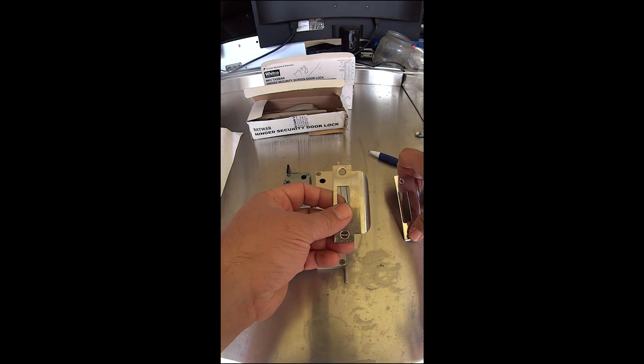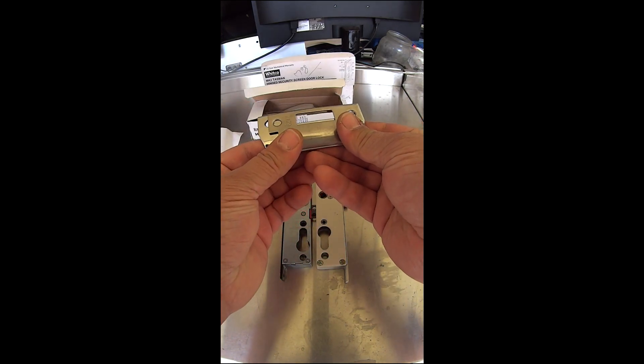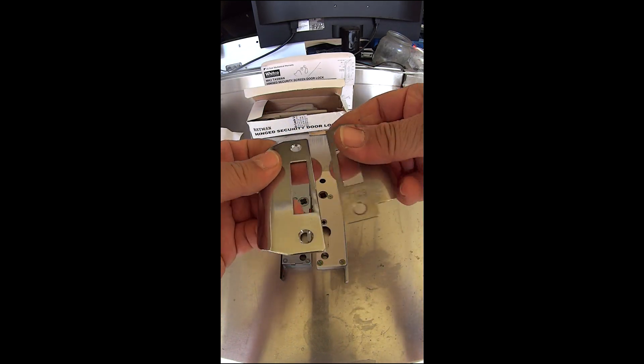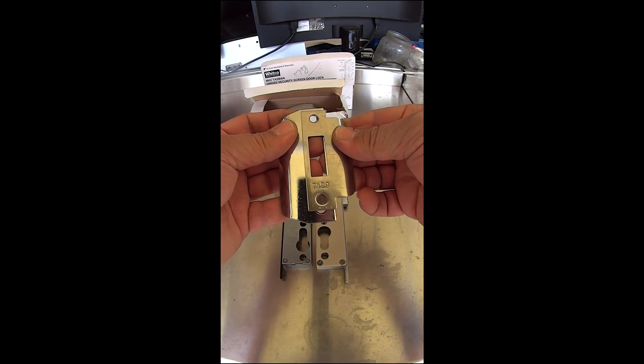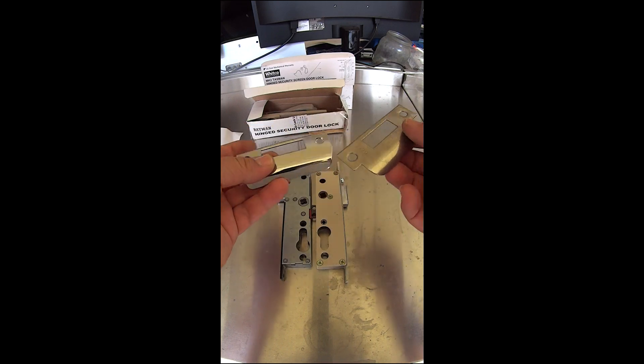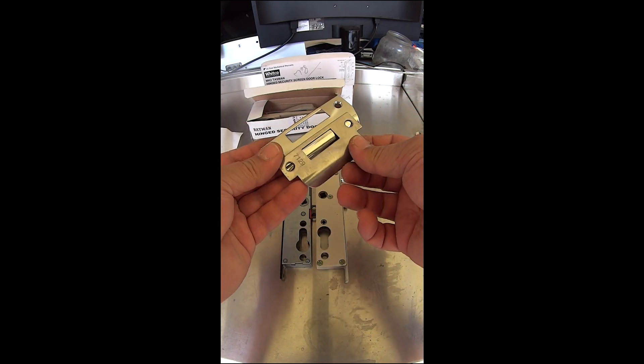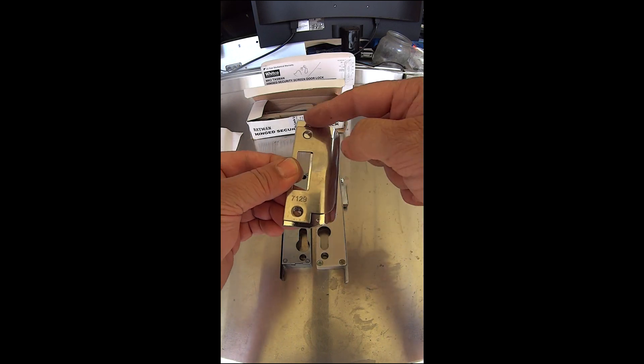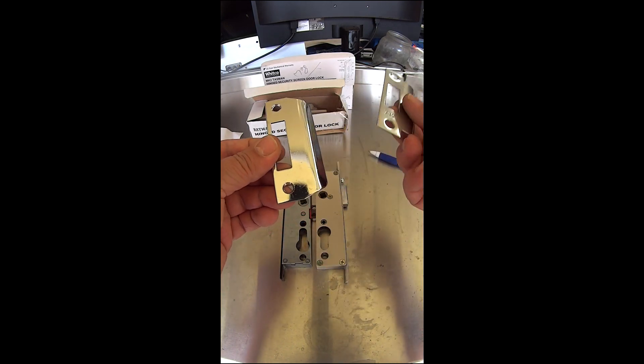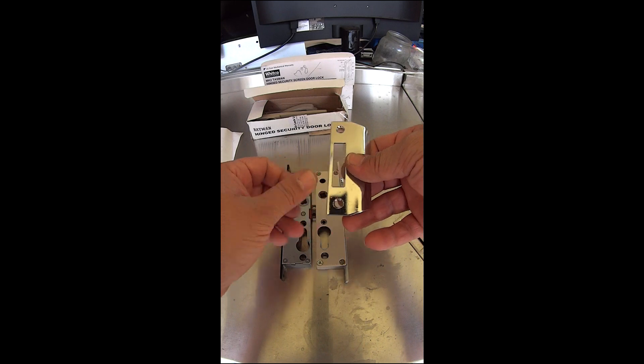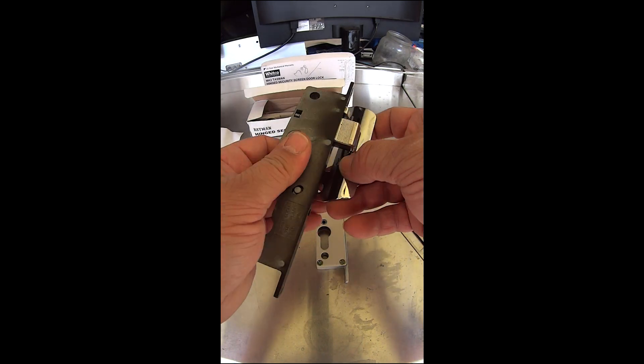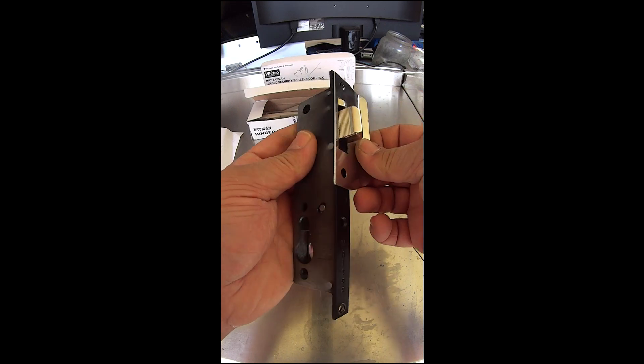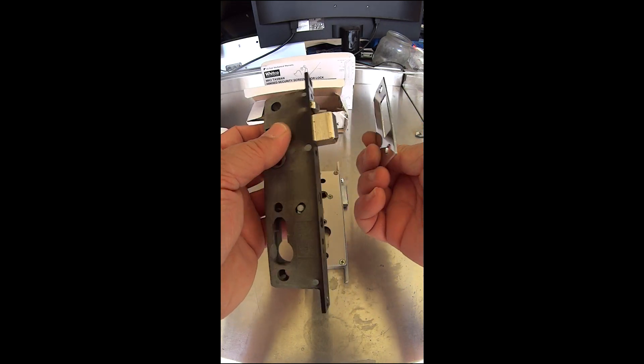If we were to replace one to the other you can see the screw holes here are different, they don't line up. The Batman one's a lot bigger so if you were to replace one to the other you would have to putty there and repaint, or you could possibly reuse this one with the Witko Tasman. That shouldn't be too big of a problem, it'll fit in there quite nicely.